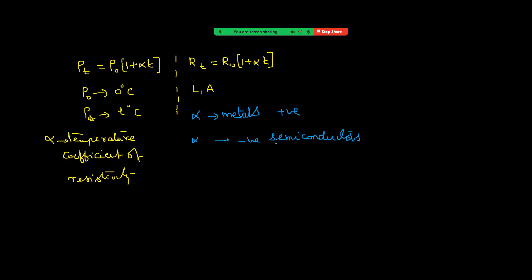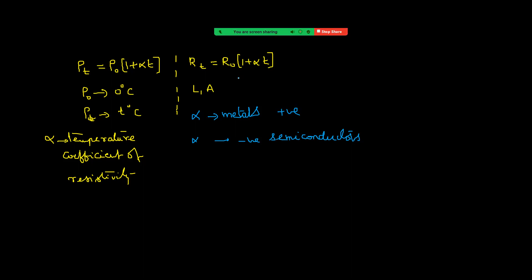Coming to semiconductors, which have very few free electrons: when temperature is increased, bonds are broken, giving more free electrons. That means with an increase in temperature, conductivity increases, and therefore resistivity decreases — resistance decreases. That is the cause in the case of semiconductors.